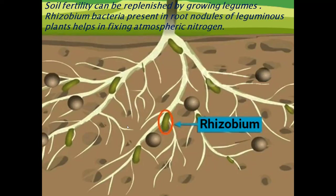Rhizobium bacteria flourish in the root nodules of leguminous plants. The bacteria make their microhabitat inside the roots of leguminous plants, and in return supply nitrogen to the plant by fixing atmospheric nitrogen. If leguminous plants are grown in the field, the soil will be rich in nitrogen.